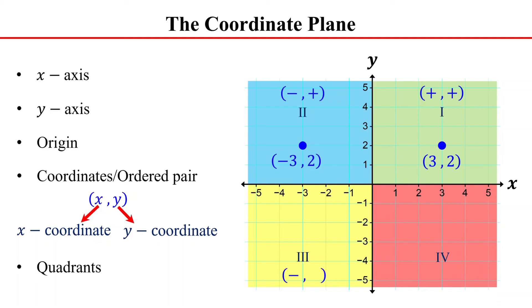In quadrant 4, the x-coordinate is positive and the y-coordinate is negative. For example, the point 3 comma negative 2 is in this quadrant.